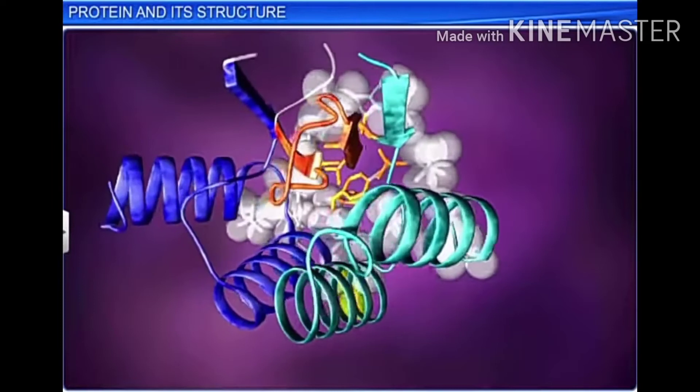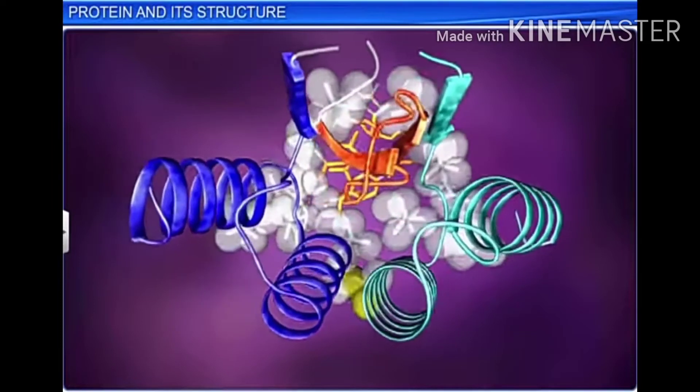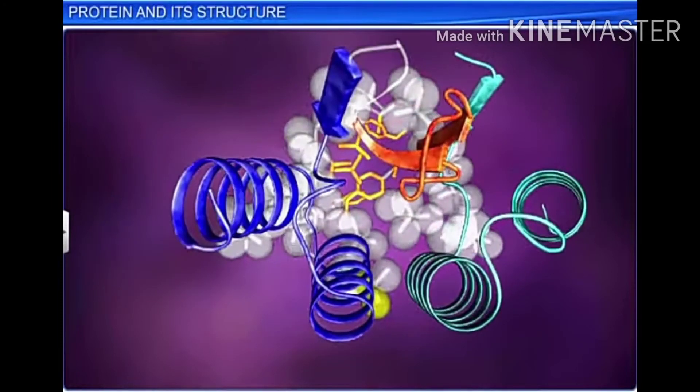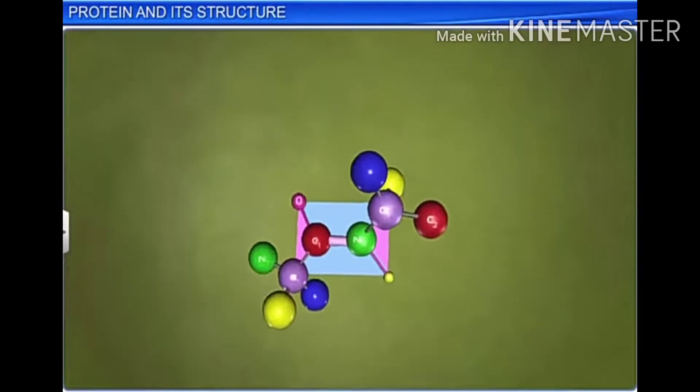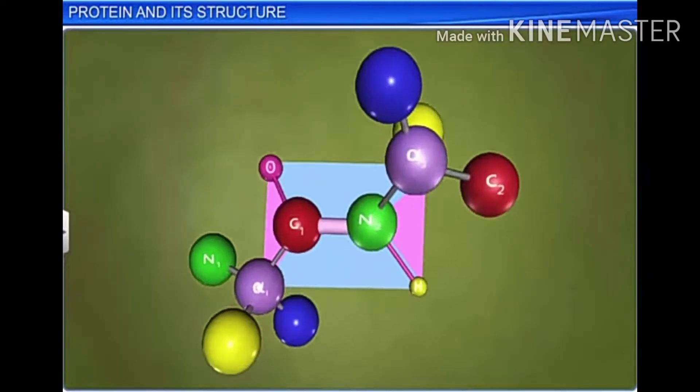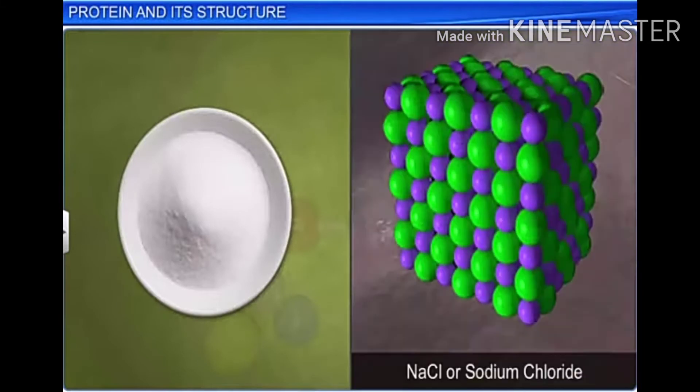Proteins form very interesting three-dimensional structures. The structure of molecules is depicted differently in different disciplines. In chemistry, structure means the molecular formula. For example, salt is also known as sodium chloride or NaCl, where NaCl is the molecular formula and not the structural formula.